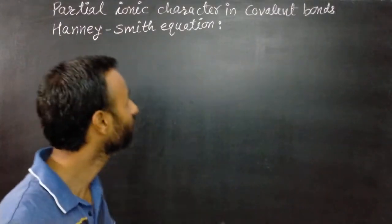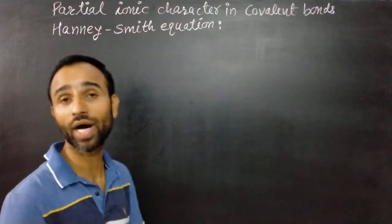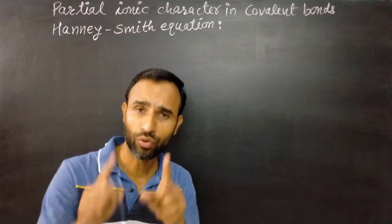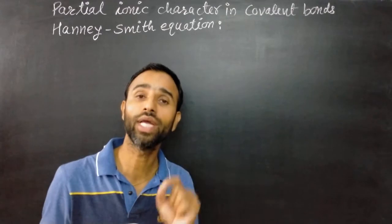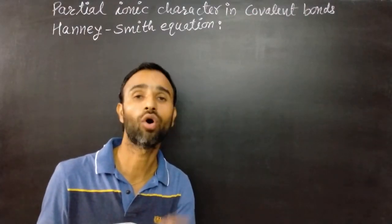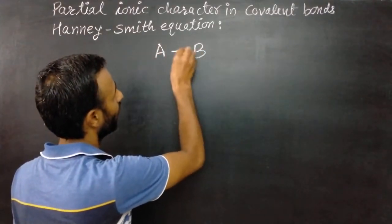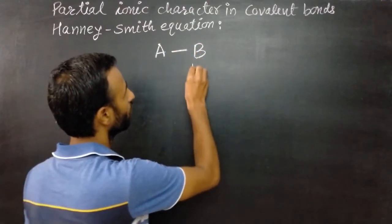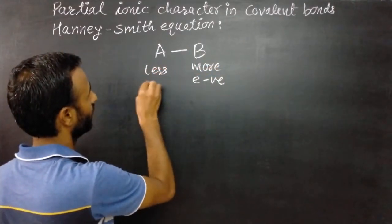Today we have a topic related to percentage of ionic character or partial ionic character in a covalent bond. No bond is purely covalent or purely ionic. There is a percentage of ionic character or covalent character. For example, if we have two atoms A and B having different electronegativity, B is more electronegative and A is less electronegative.